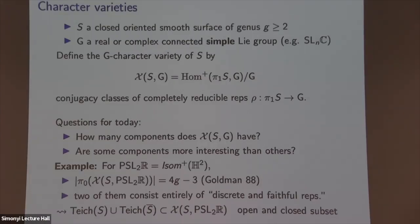Two of these components consist entirely of representations — group homomorphisms — which are so-called discrete and faithful. This means the representation is injective and the image is discrete. These types of objects act properly discontinuously by isometries on the hyperbolic plane, and the quotient is your surface back but equipped with a hyperbolic metric. In this way, you can realize the Teichmüller space of hyperbolic structures on the surface as open and closed subsets of this character variety.